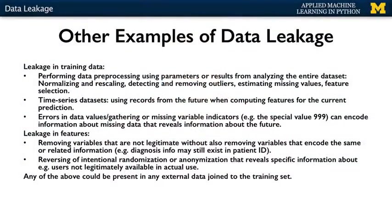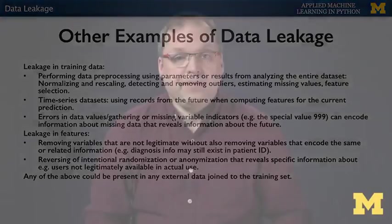Another critical need for caution occurs when working with time series data, where records for future events are accidentally used to compute features for a particular prediction. The session length example we saw was one instance of this, but more subtle effects can occur if there are errors in data gathering or missing value indicators. If a feature relates to collecting at least one record in a time span, the presence of an error may give away information about the future — in other words, that no further observations are to be expected.